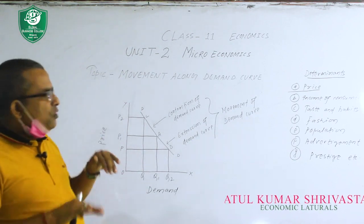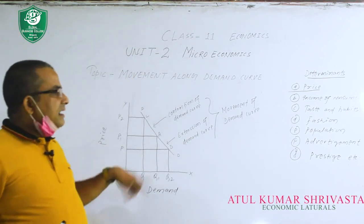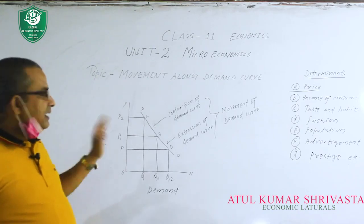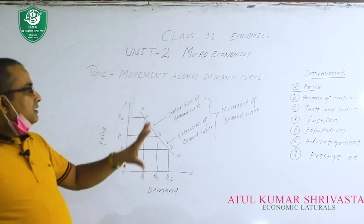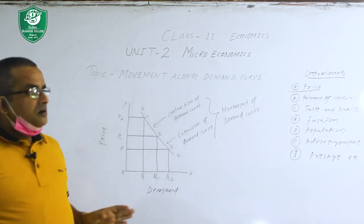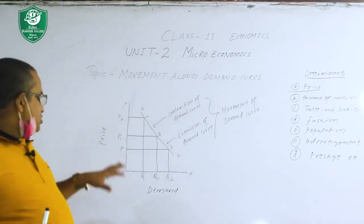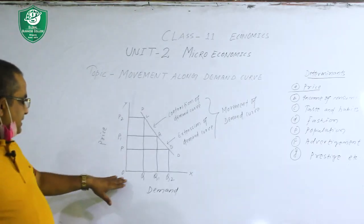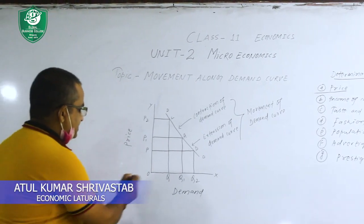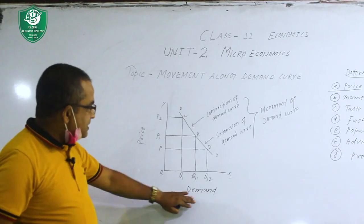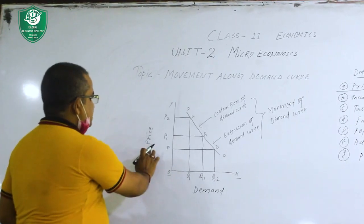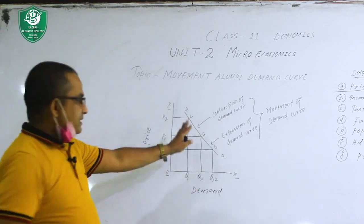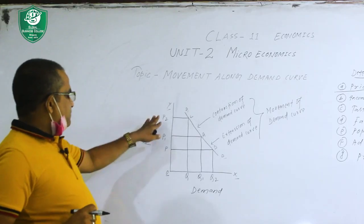If the DD curve shifts to another curve, that is called a shift. But when the demand curve just moves upward or downward within the same curve, it is called movement. The main reason the demand curve moves either downward or upward is price. I will now explain movement along the demand curve by drawing a curve. On the OX axis we have demand, and on the Y axis we have price. This is the demand curve DD.